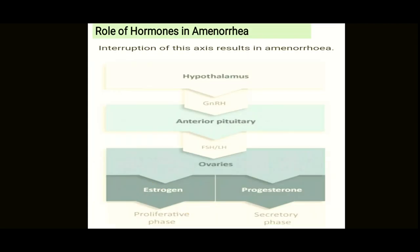This is how the HPO axis — the hypothalamic-pituitary-ovarian axis — works. Any interruption of this axis will result in amenorrhea. The hypothalamus releases GnRH, which goes to the anterior pituitary to release LH and FSH. These gonadotropins act on the ovary, which produces estrogen and progesterone. Estrogen is responsible for the proliferative phase and progesterone for the secretory phase.